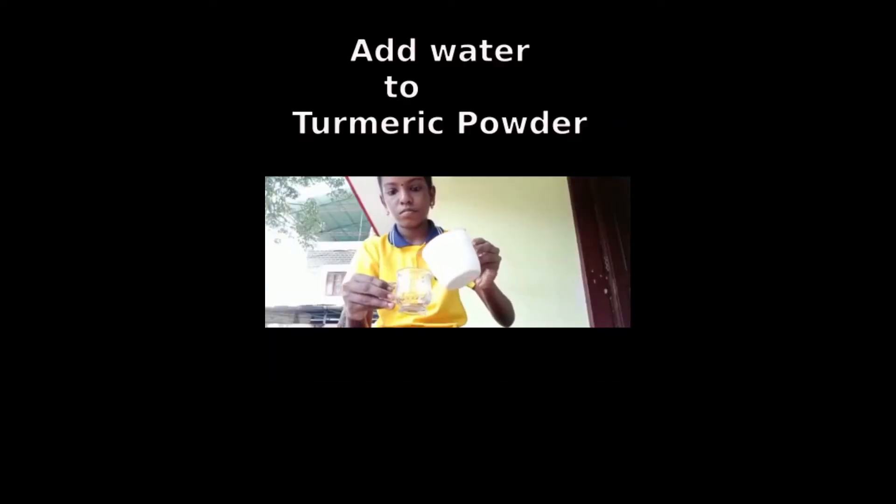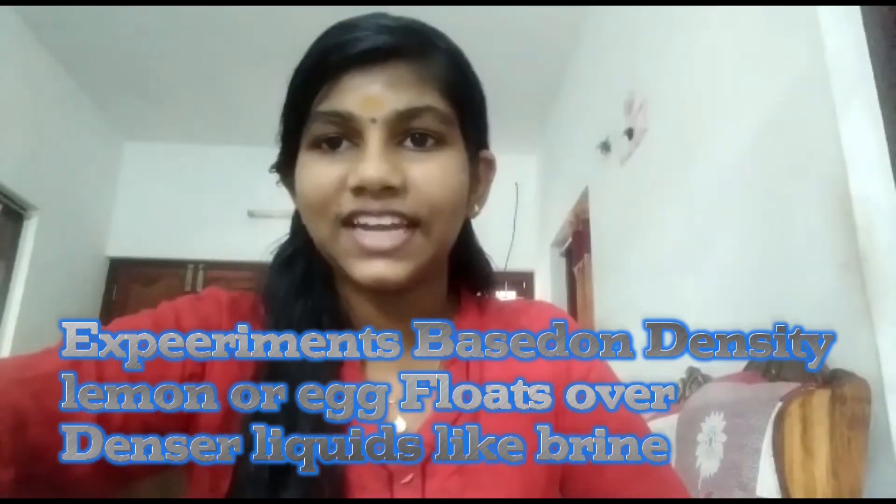Hi friends, I am Roshana Shidu. Today I am going to do an experiment based on base and indicators. Add some detergent powder — observe the color. The color changes into red with the help of base. Put some lemon juice — observe the color turns yellow.